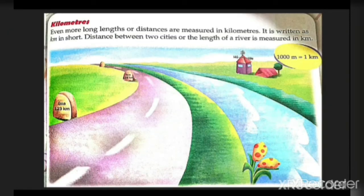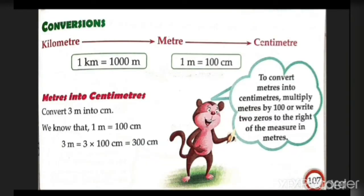Even more long length distances are measured in kilometers. It is written as km in short. Distance between two cities or the length of a river is measured in kilometers. One kilometer is 1000 meters.